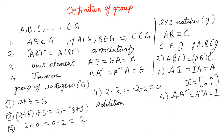The fourth condition is that A·A⁻¹ equals A⁻¹·A equals I, so there is an inverse. We are actually talking about invertible matrices, since some matrices do not have an inverse, so we should specify invertible matrices.